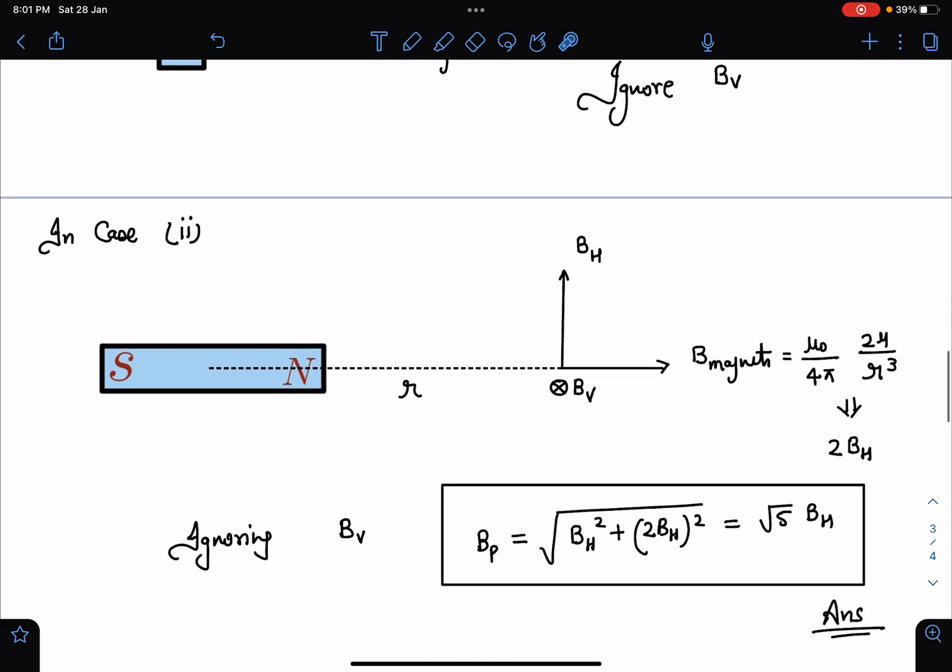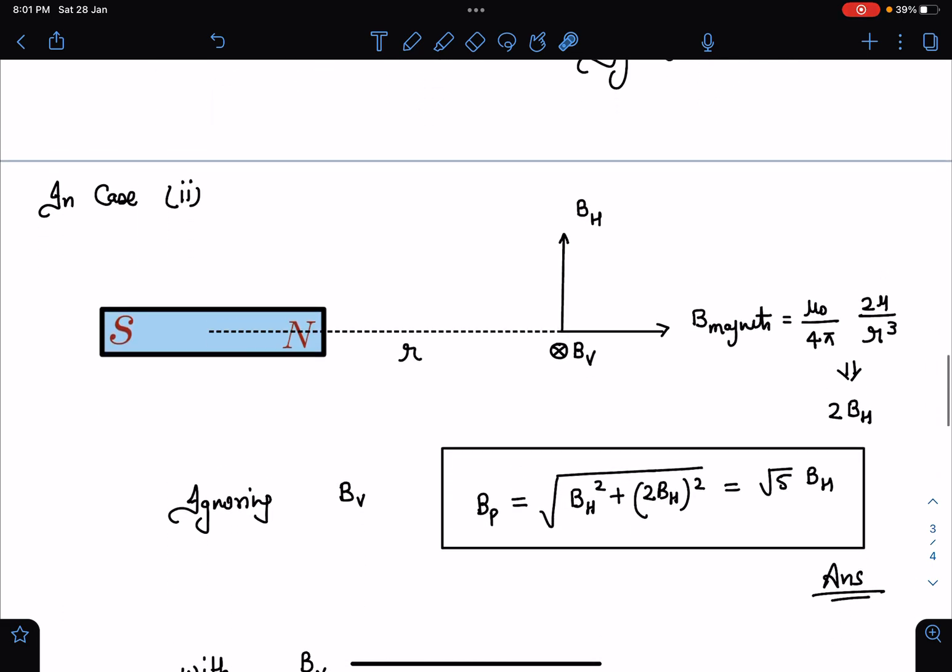In case 2, they are asking us net field at point P. So the mistake normally they do is they give answer without including BV. In my opinion, they should include BV also. But we can say because in the plane, if we are talking about the net value of magnetic field, then answer is fine.